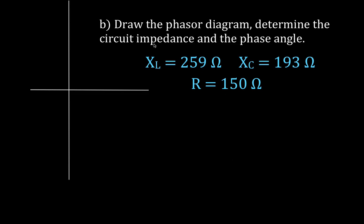Next we're going to draw the phasor diagram and determine the impedance and phase angle. When drawing the phasor diagram: resistance is drawn on the positive x-axis, capacitive reactance on the negative y-axis, and inductive reactance on the positive y-axis. We have two vectors on the y-axis and one on the x-axis, so we need to sum the y-axis vectors.